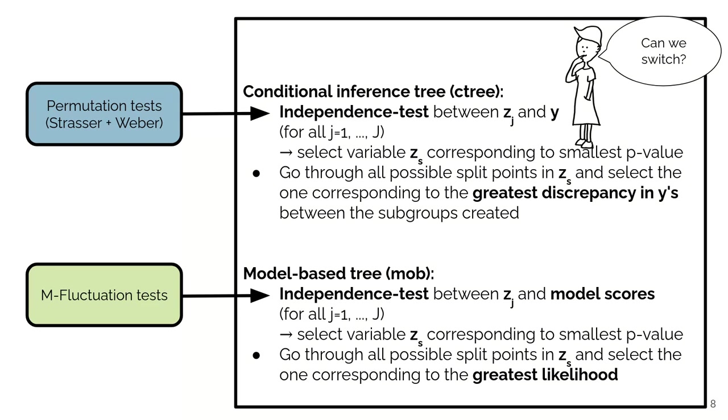And so Torsten in the conditional inference trees implemented the permutation tests according to Strasser and Weber, and Achim in model-based trees implemented the fluctuation tests. But at some point we thought, okay, could we actually switch or use the fluctuation tests also for ctree and the other way around? And of course again the answer is yes, yes we can.